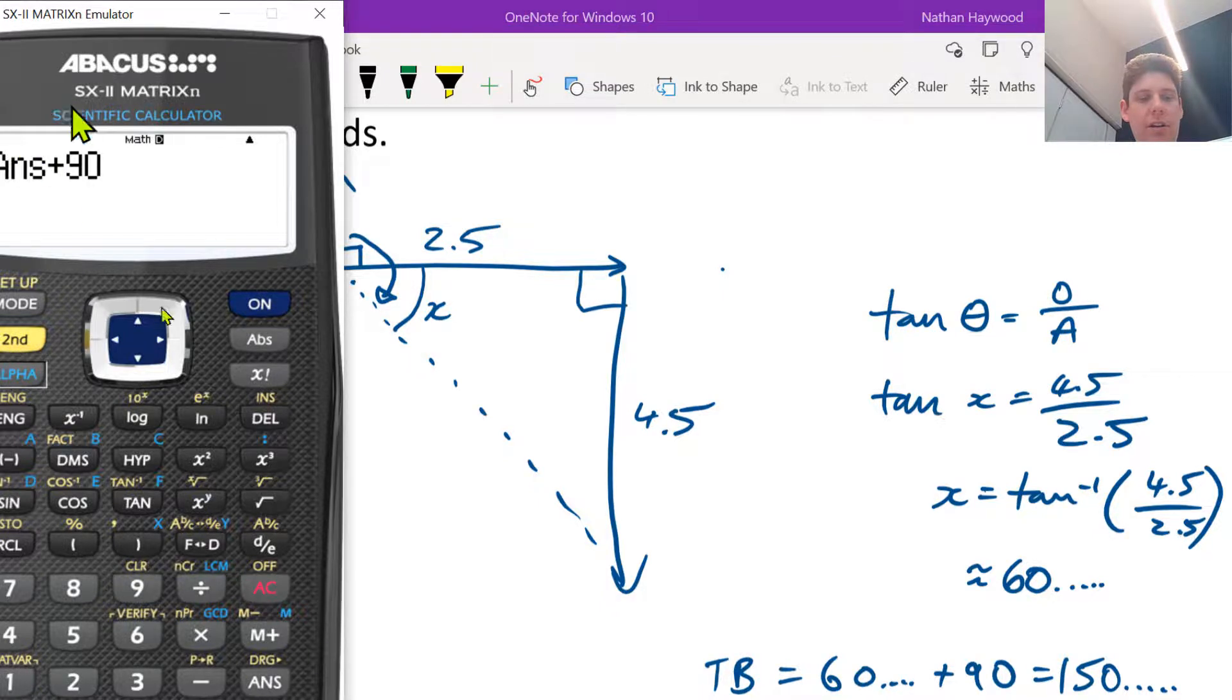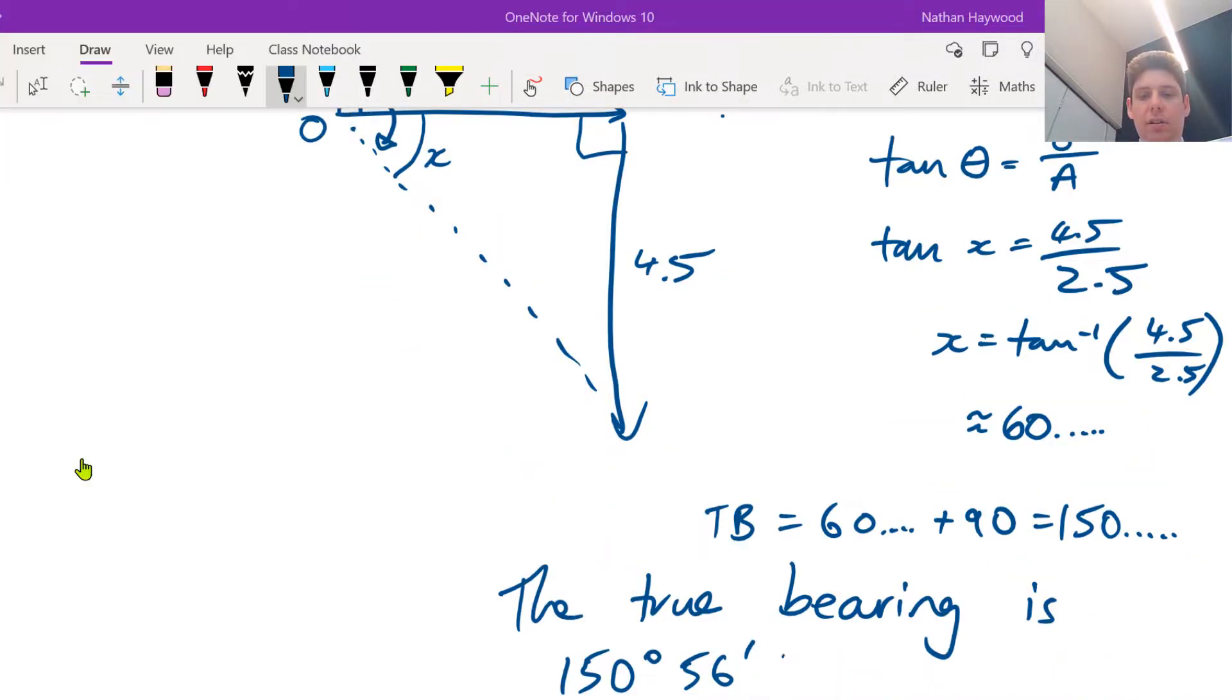SOHCAHTOA. And then how do we convert it to DMS, degrees minutes seconds? Hooray! 150 degrees 56 minutes 43.43 seconds.